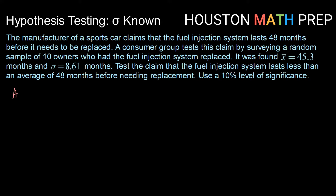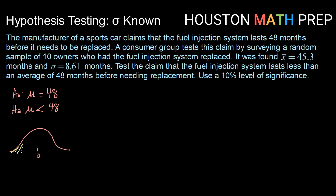Just like every hypothesis test, we need to start by writing a pair of hypothesis statements. Since we are working with a mean, we're going to have both of those hypothesis statements in relation to mu. We want to make our null hypothesis a statement of equality, so we're going to have mu equals 48 months. The claim will go in our alternative hypothesis, and that is that mu is less than 48 months. Drawing that on a distribution, since we have mu less than 48, we're going to have a one-sided left-tailed test.